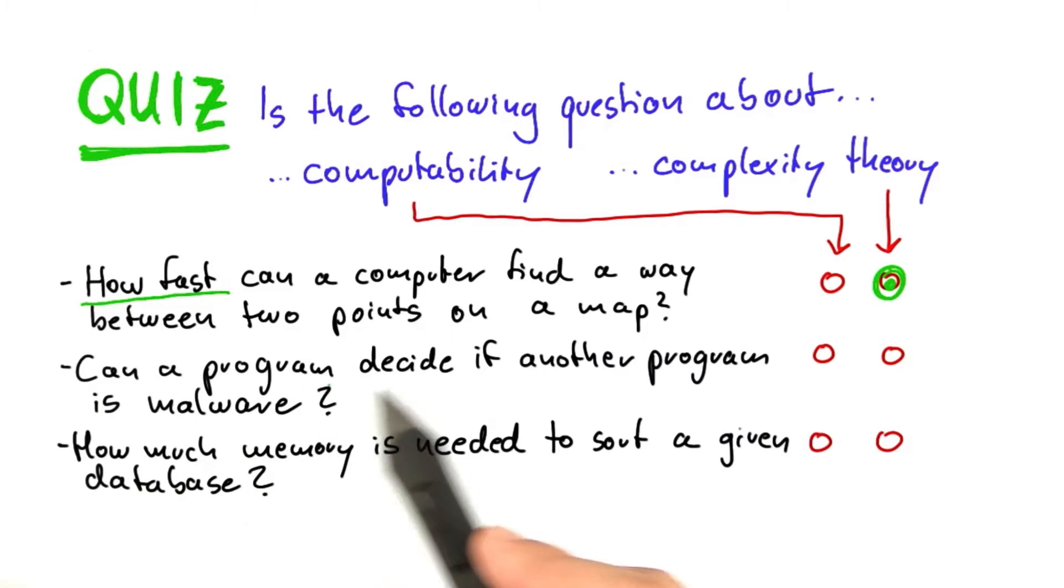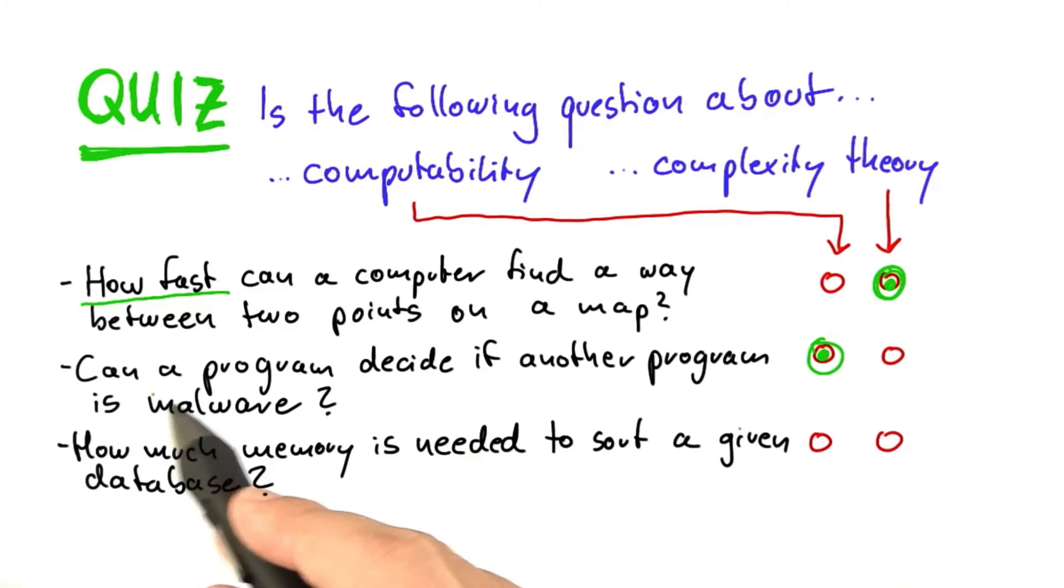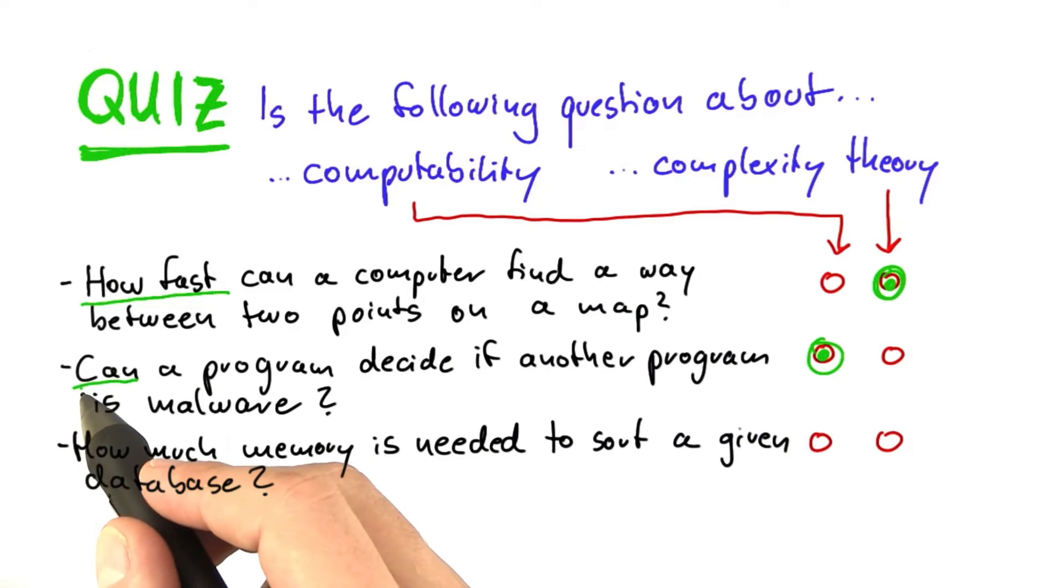Asking if a program can decide if another program is malware, that belongs into computability, because we are not asking about any resources. We're just asking if it's possible in principle.